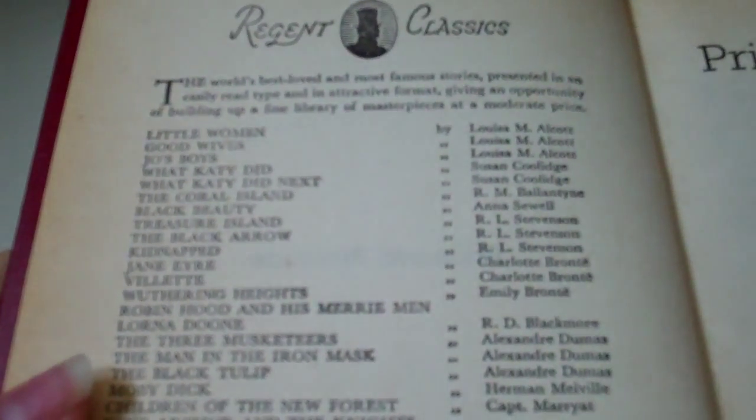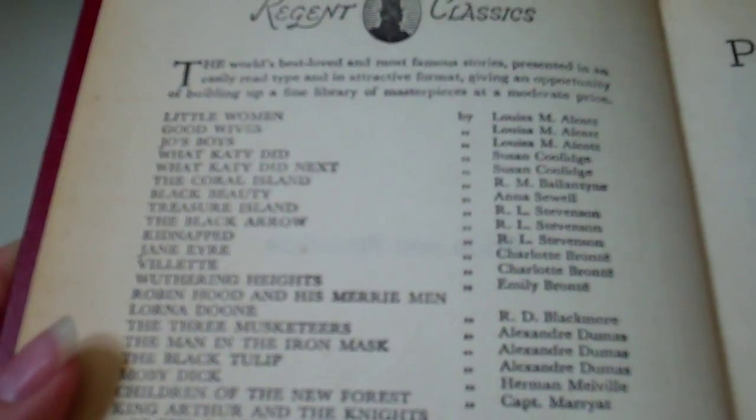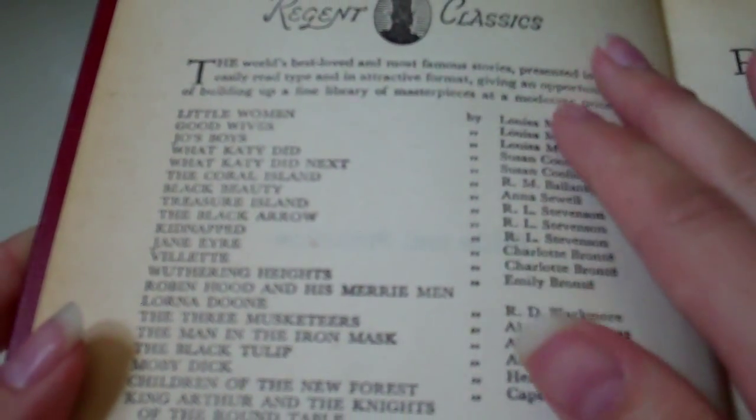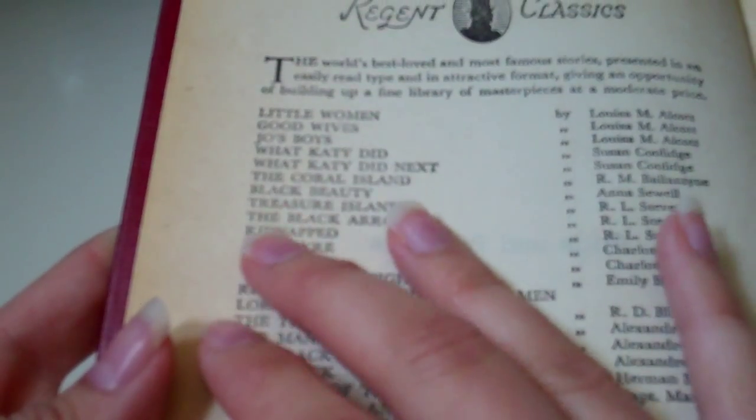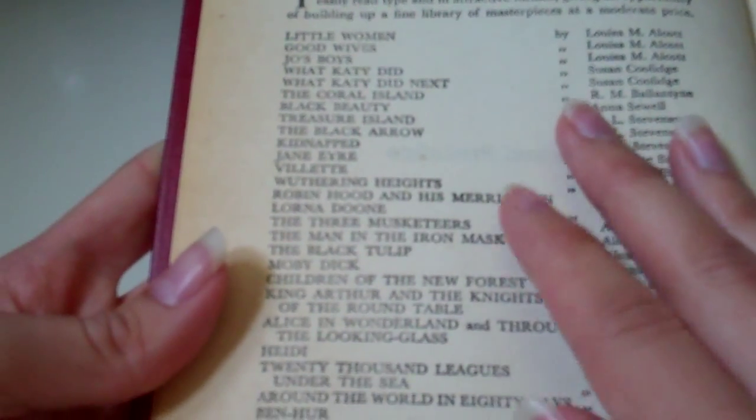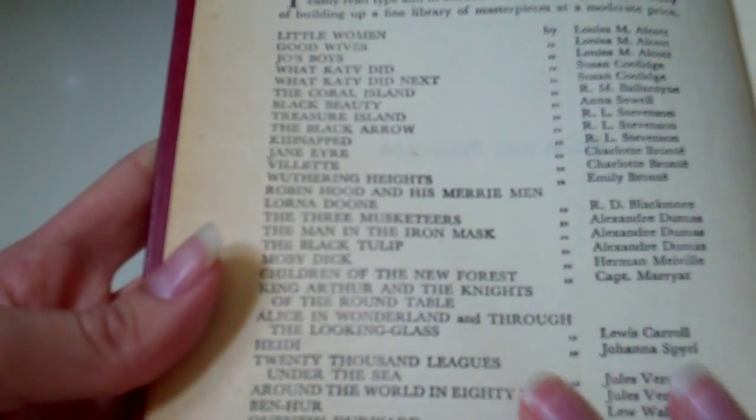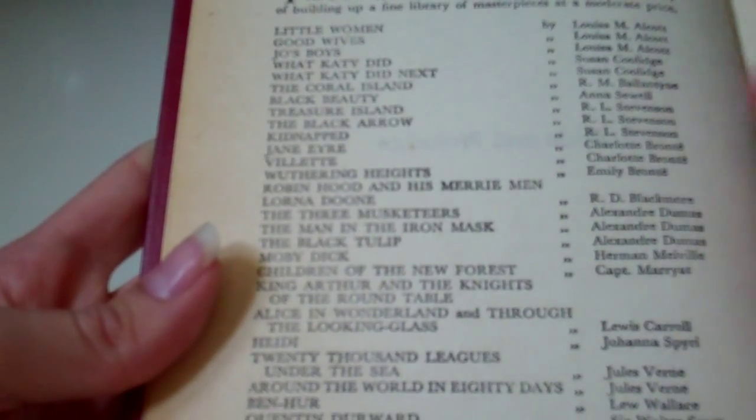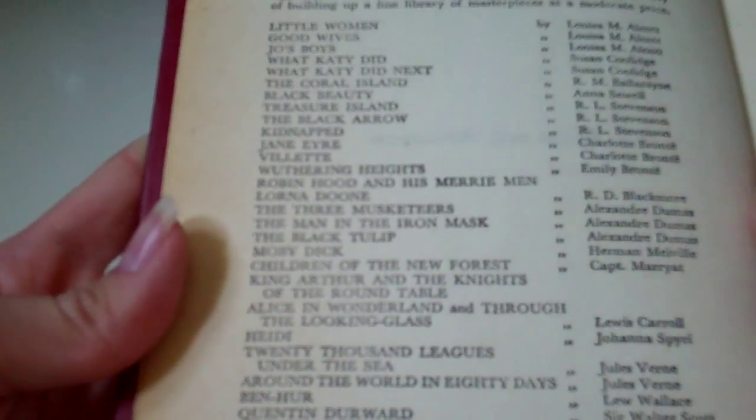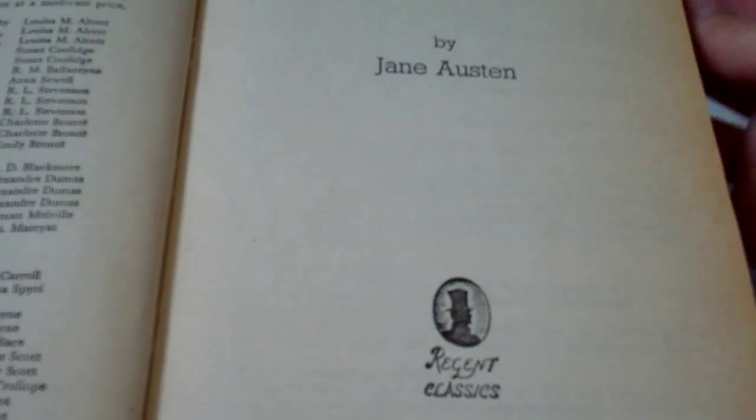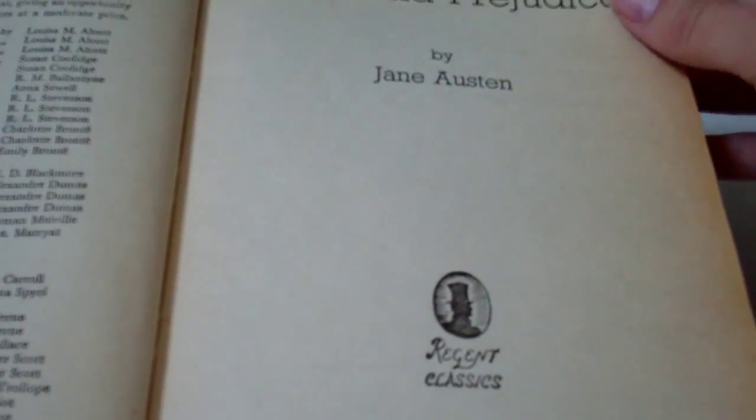Here are some of the other books in the Regent Classics collection: Little Women, Treasure Island, Jane Eyre, Wuthering Heights, The Man in the Iron Mask. I actually have quite a few of these books. They all have those red covers.